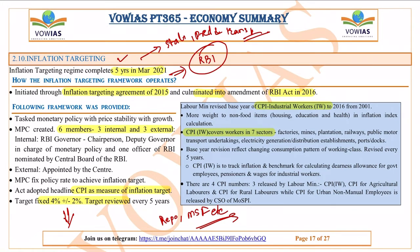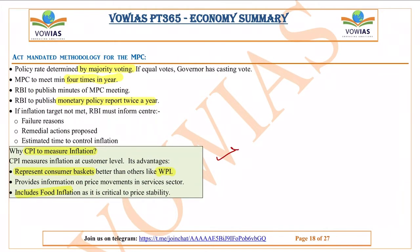The monetary policy of RBI is decided by a committee called the Monetary Policy Committee, which has six members — three from RBI and three from external sources. The RBI chairperson will be part of this committee and the external persons are appointed by the governor.